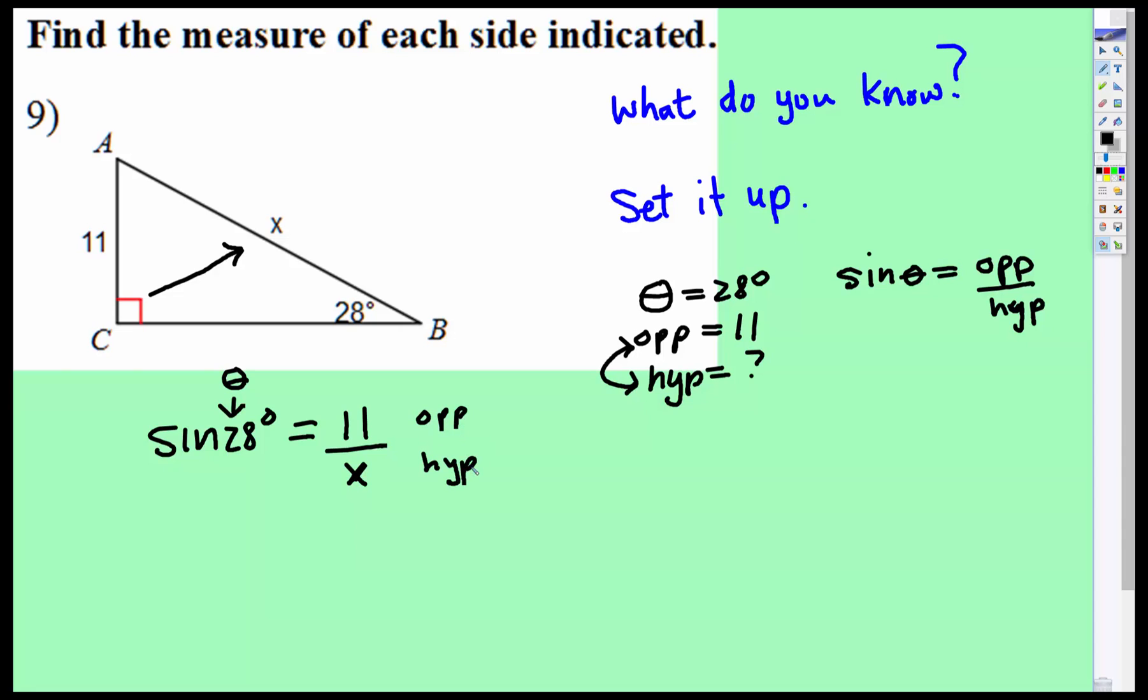Alright, well there's a couple ways we can do this. We can remember to get rid of something that's being divided in the denominator, you can multiply, and then you'd multiply both sides.